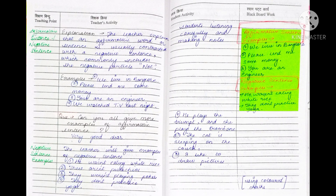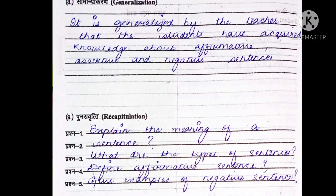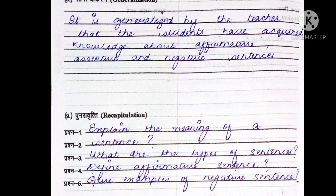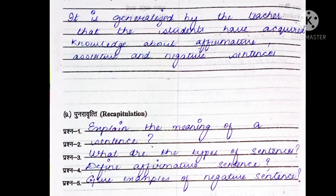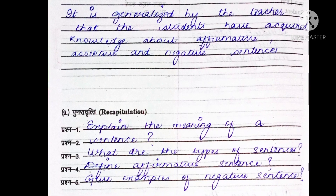Next, the teacher will discuss affirmative sentences, provide the explanation, and discuss negative sentences. It is generalized by the teacher that the students have acquired knowledge about affirmative, assertive, and negative sentences.